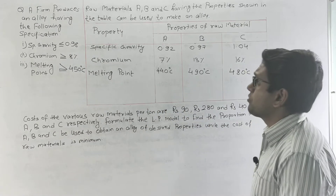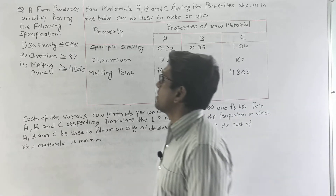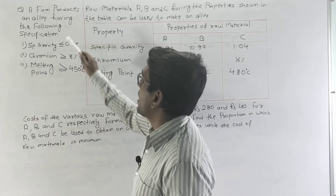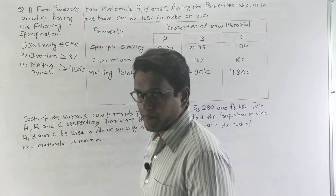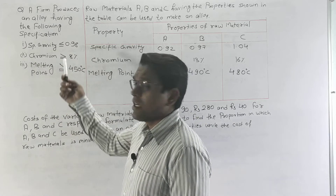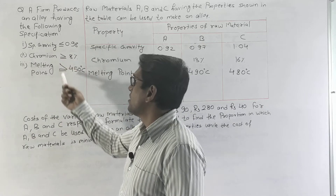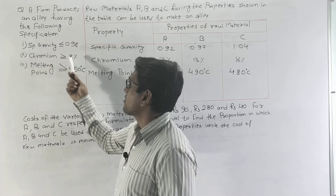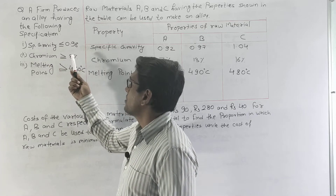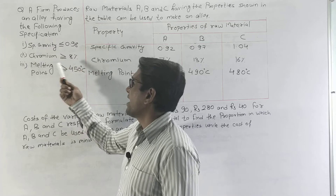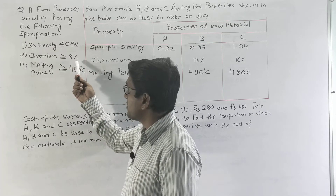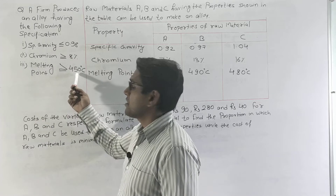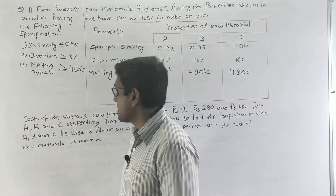In this problem it says that a firm produces an alloy having the following specifications: specific gravity has to be less than or equal to 0.98, chromium has to be greater than or equal to 8 percent, and melting point has to be greater than or equal to 450 degrees centigrade.